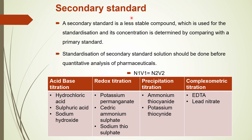A secondary standard is a less stable compound used for standardization, whose concentration is determined by comparing it with a primary standard. The secondary standard is not as pure as a primary standard and requires standardization. Standardization of a secondary standard solution should be done before quantitative analysis of pharmaceuticals, using the formula N1V1 = N2V2.